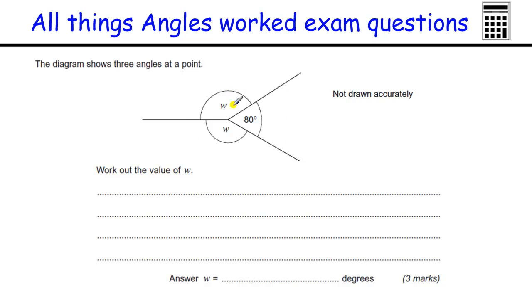Another question about angles around a point, but this time we've got two angles labeled W. That means they're both the same. So we've got W plus W plus 80 is 360. So two lots of W, because they're the same angle, must be 360 minus 80. So two W equals 280, so one of the W's must be a half of that, which is 140.